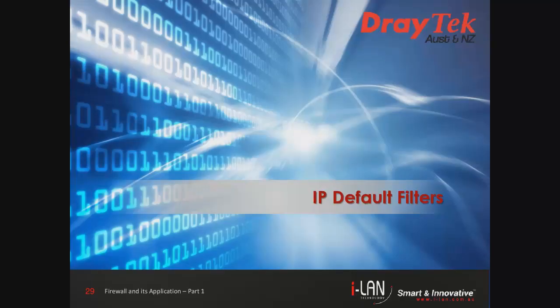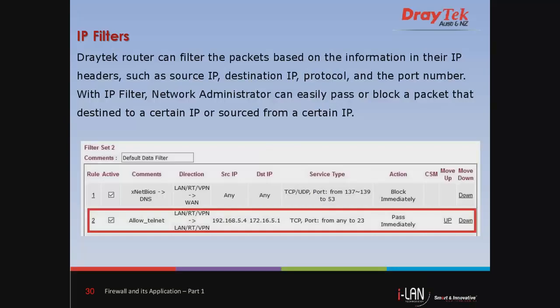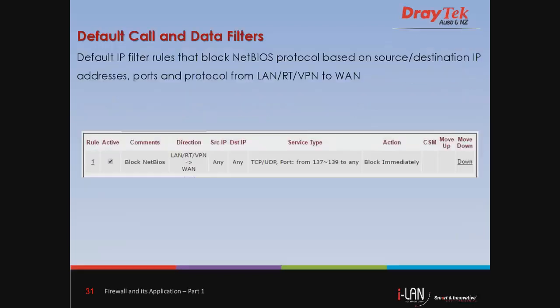The next topic is IP Default Filters. Draytek routers can filter packets based on information in their IP headers, such as source IP, destination IP, protocol, and port number. With IP filters, a network administrator can easily pass or block a packet destined to a specific IP or source. Default call and data filters are default rules that block traffic based on source and destination IP addresses, protocol, and port numbers from LAN, router, and VPN going to WAN.